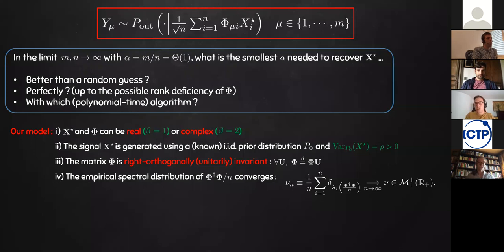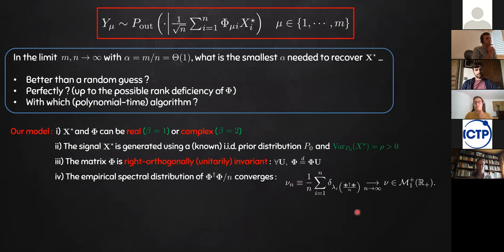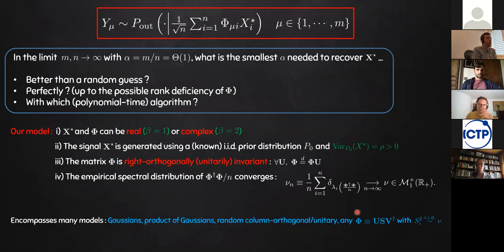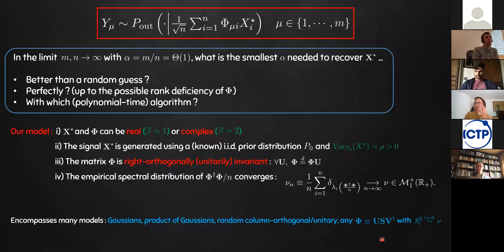I define a parameter beta, which is 1 in the real case and 2 in the complex case. I assume the signal was generated from some prior distribution I know, with variance rho. For the sensing matrix, I assume it is orthogonally invariant on the right — meaning its right singular vectors are completely delocalized — and also that its empirical singular value distribution converges in the large-n limit. This encompasses Gaussian models, products of Gaussian matrices with unitary or orthogonal matrices, and many more.